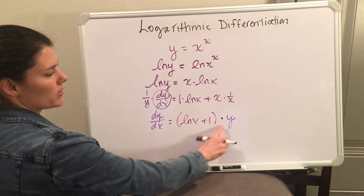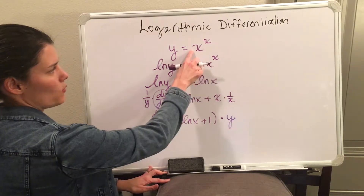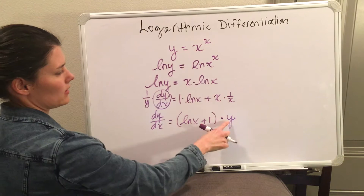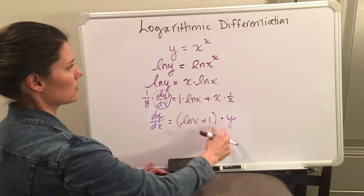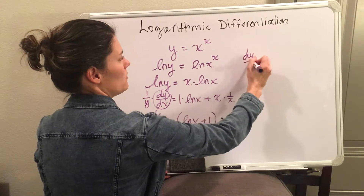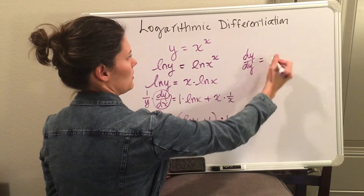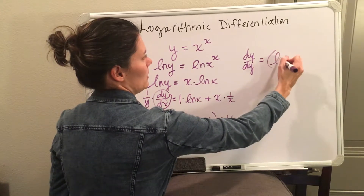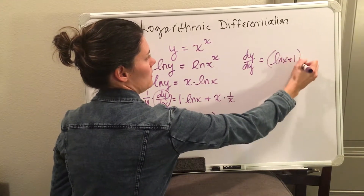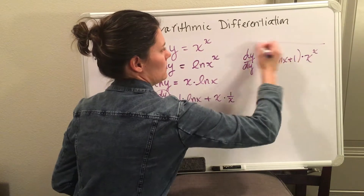You want to solve for dy/dx by multiplying y over to the other side, but remember you don't want to keep it as y. Y was given at the beginning of the problem, so substitute it back in. Your final answer will be dy/dx equals the quantity natural log of x plus 1, times x to the x.